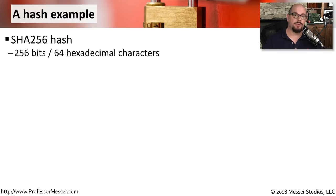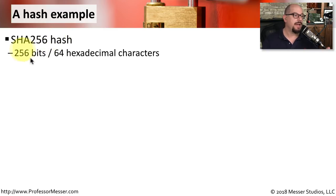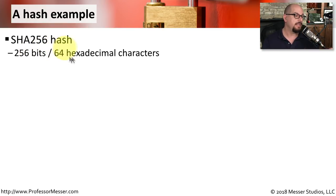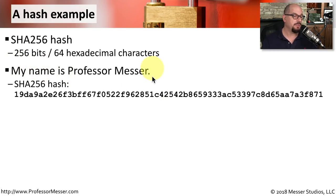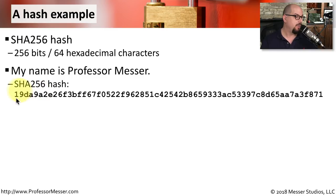Let's look at the process of creating a hash. We're going to use the SHA-256 hashing algorithm, which creates a hash that is 256 bits in length. We usually represent this as something human-readable by using 64 hexadecimal characters. For this hash, we'll take a simple sentence: "My name is Professor Messer." with a period. If we perform the SHA-256 hash of that text, we receive this particular hash value.